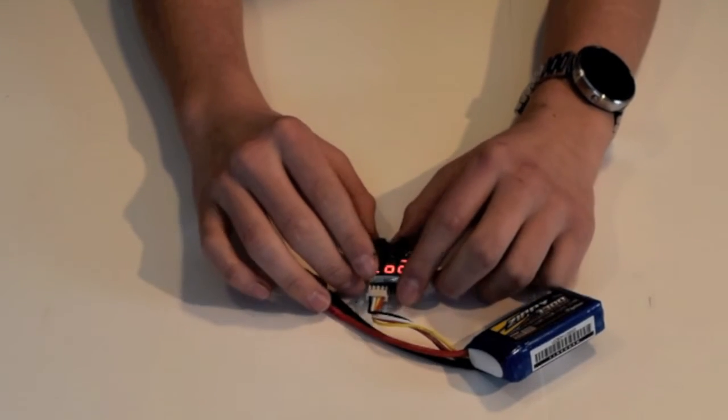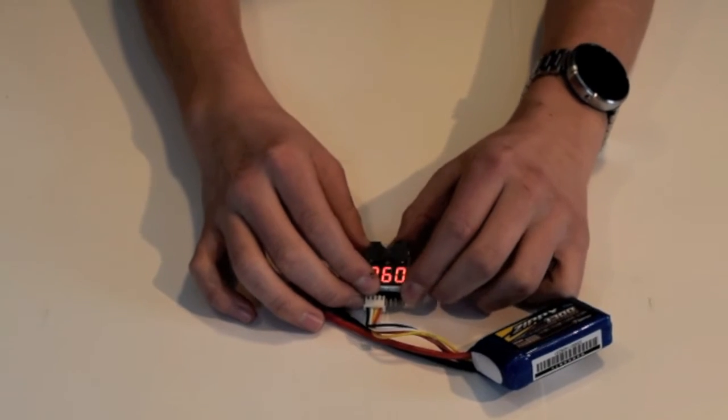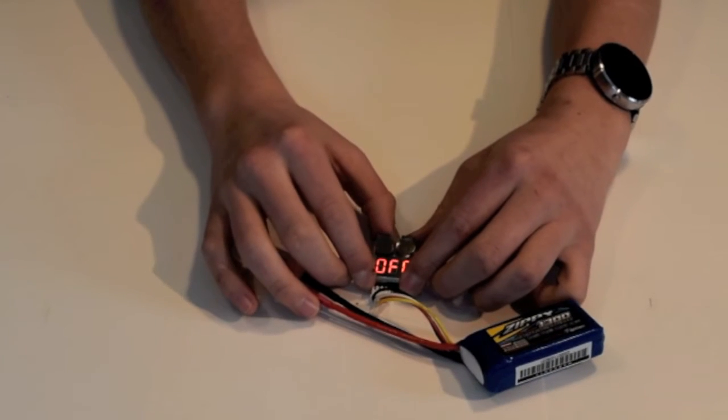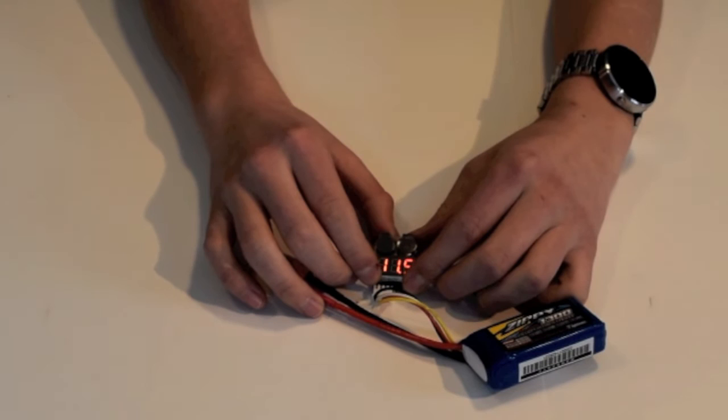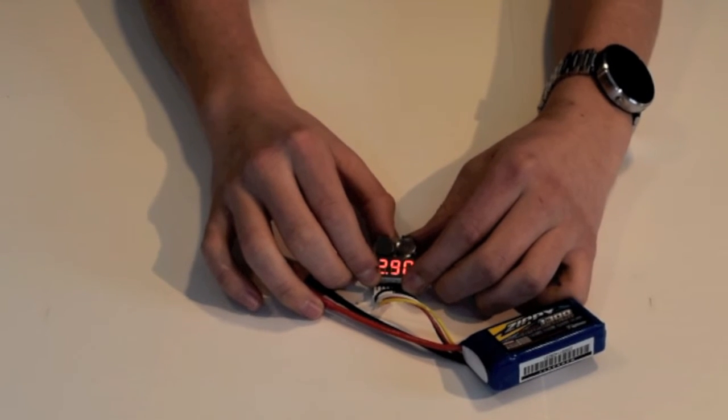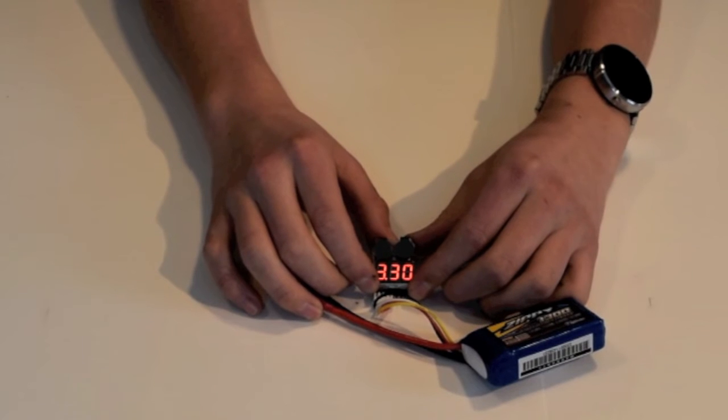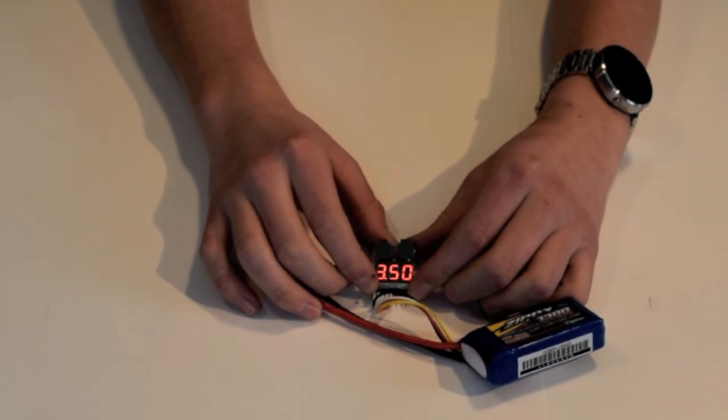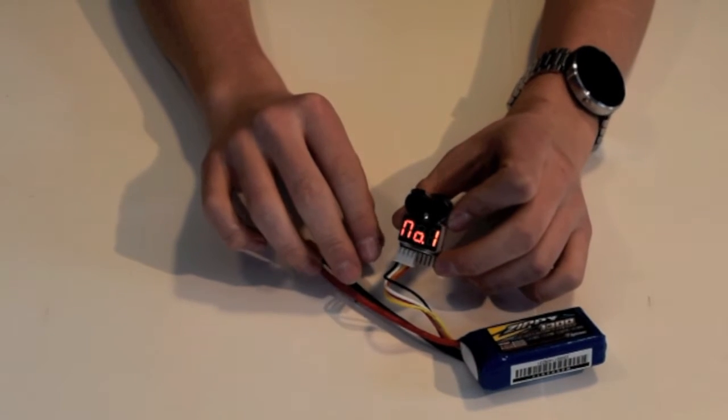So I'm just going to show you how to set it to 3.5. So you click it, and every time you click it goes up a value until it reaches 'off,' then it'll go back down to 2.7, and you keep clicking it till it reaches 3.5. Now I'm just going to show you a quick clip on putting it on my quadcopter.